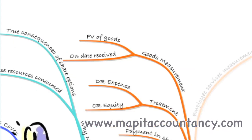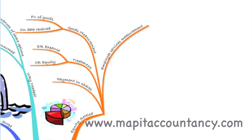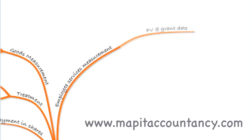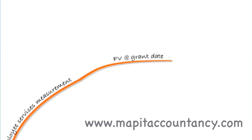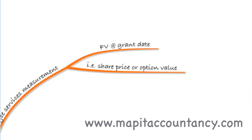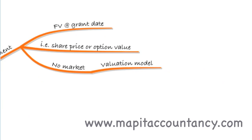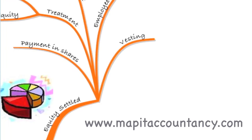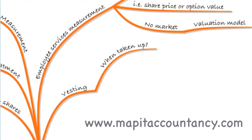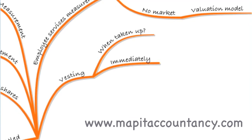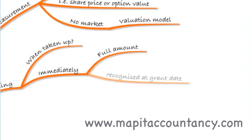It became more complicated when we looked at employee services. Employee services are difficult to get a fair value for and may be happening over a period of time, so we need a calculation for that. We start with the fair value at the grant date — the fair value of the share price or the share option which has been granted. If there's no market, you can use a valuation model to calculate the value of the option. We also then talked about vesting — when the options or shares are going to be taken up. If taken up immediately, recognise the full amount at the grant date. However, if recognised over a number of years, in each year you'll need to do this calculation.